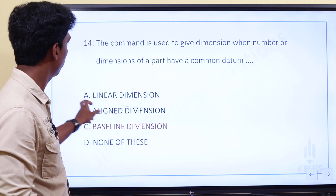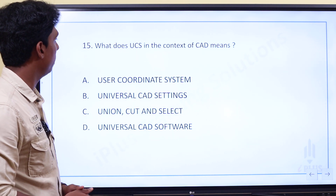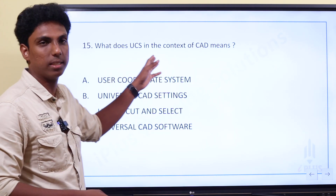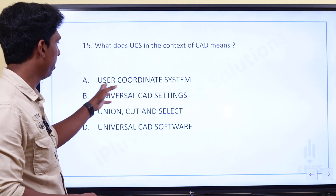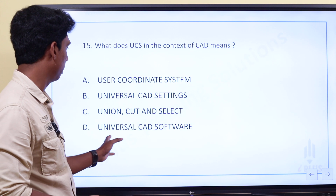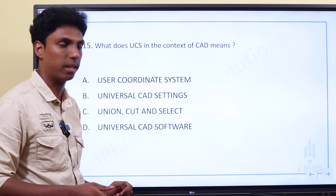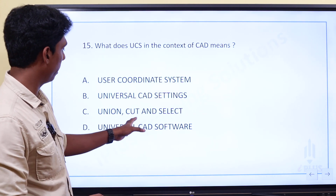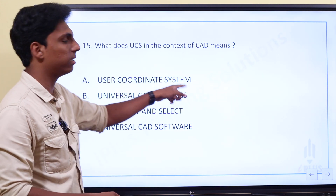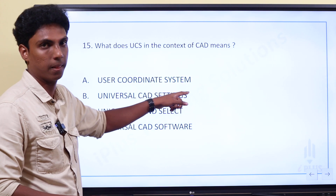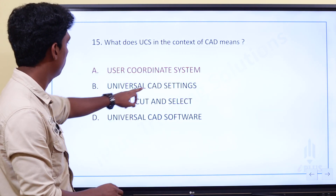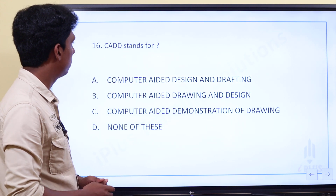Dimension question. What does UCS stand for? The options are User Coordinate System, Universal CAD Settings, or Union Cut and Select. The answer is User Coordinate System.